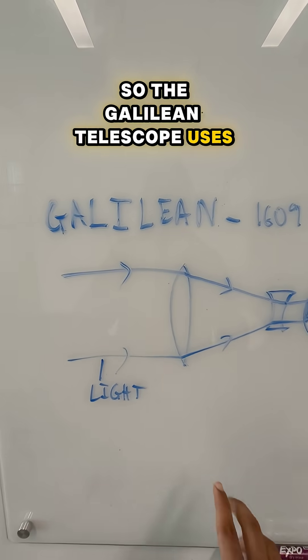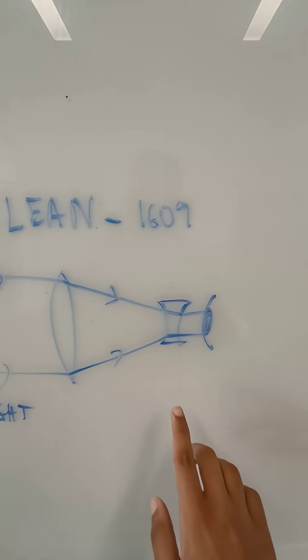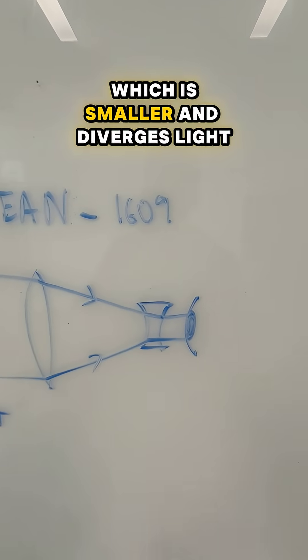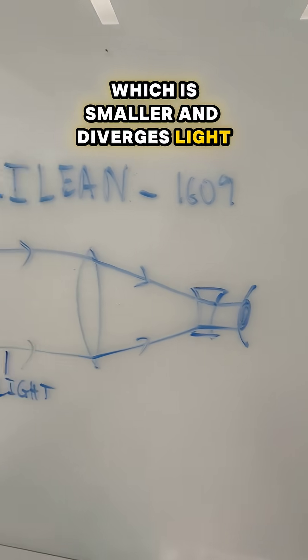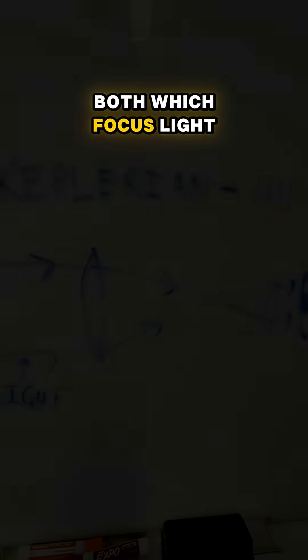The Galilean telescope uses one convex lens that focuses light as the objective and one concave lens which is smaller and diverges light. The Keplerian uses two convex lenses, both which focus light.